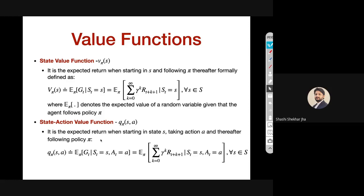A similar value is defined for state-action pairs. The Q value is the reward you can accumulate going into the future when you start in state s and take action a. Nothing changes in the definition — the extra thing is you're also considering the action taken in that state. In order to calculate this Q value, pi is assumed given, so we consider the policy is given to us.